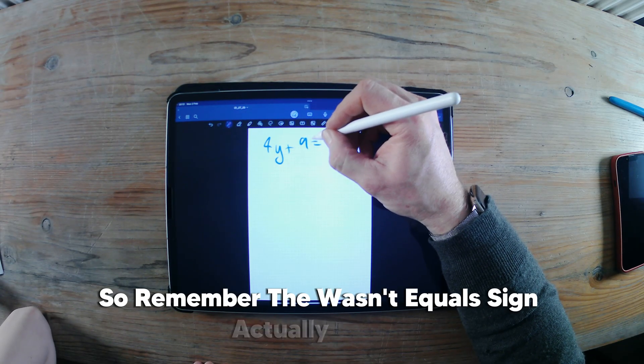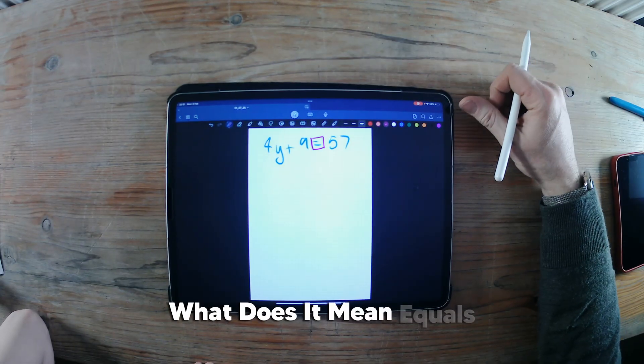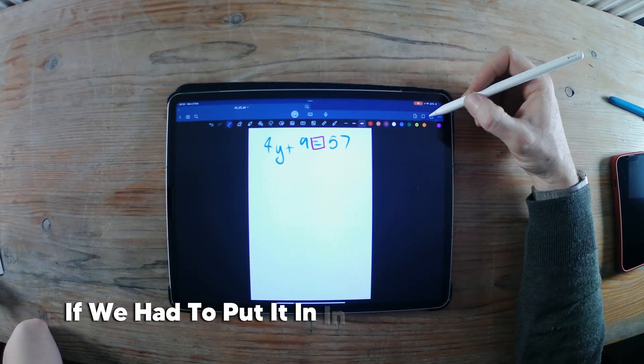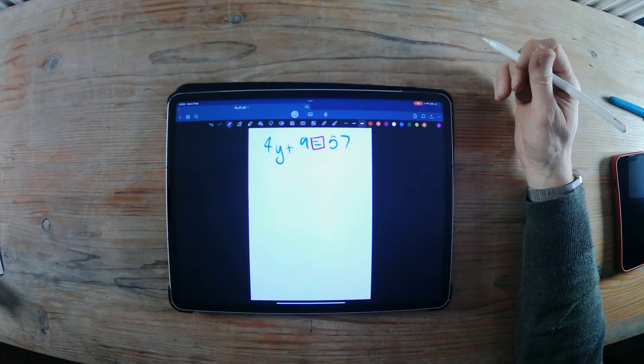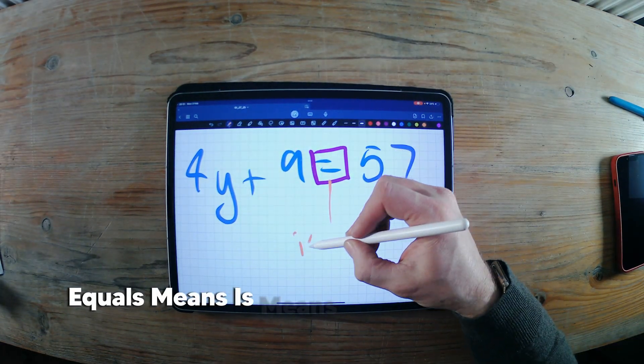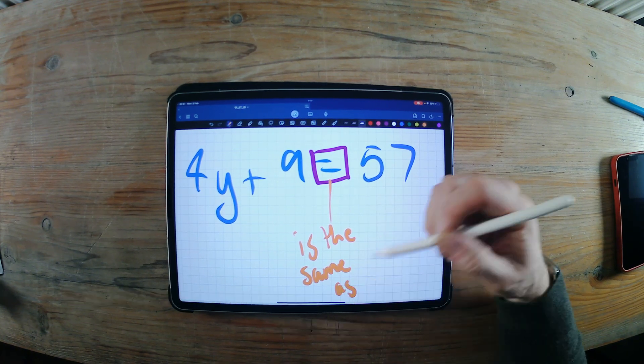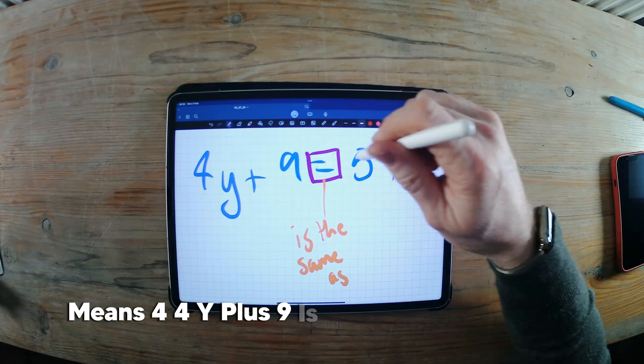So remember what an equals sign actually means. Because we just say equals, we don't think about what it means. What does it mean, equals? If we had to put it in different language, what would we say? Equals... Means... Is... Means... The... Is the same as... As, right? It means that 4y plus 9 is the same as 57.